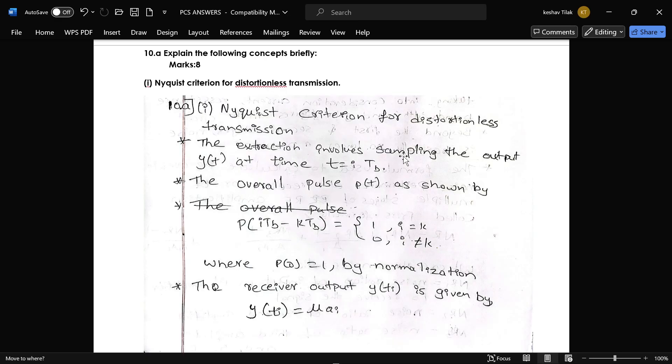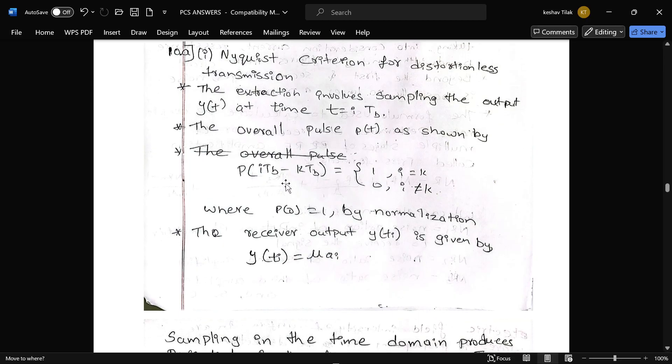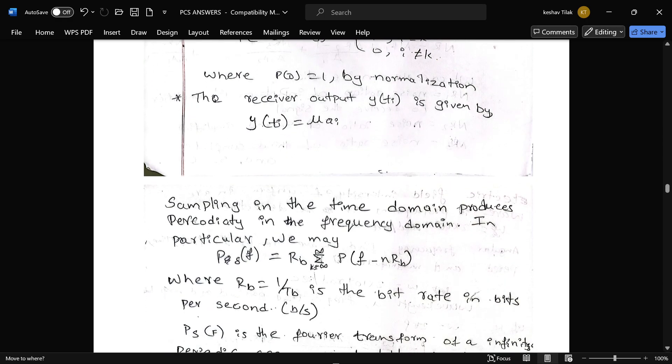Next question is 10A. Explain the following concept quickly. That is Nyquist Criterion for Distortion Less Transmission. And this is the explanation for that. You can refer by pausing the video.